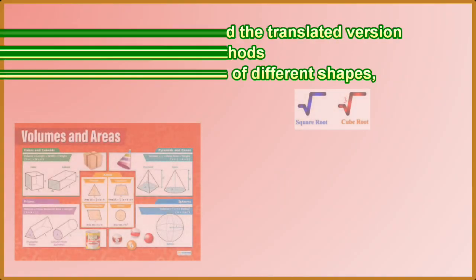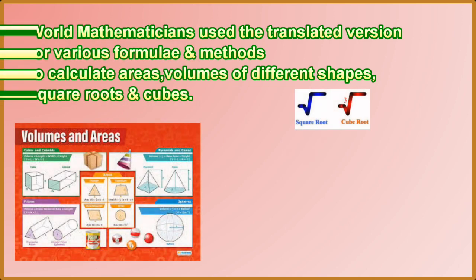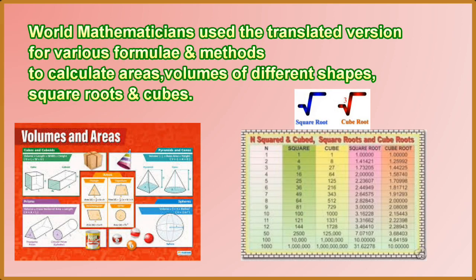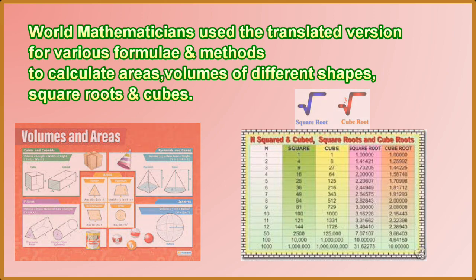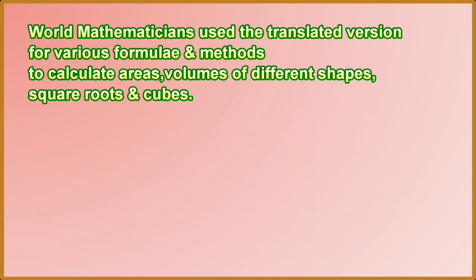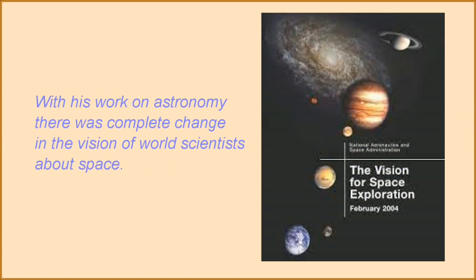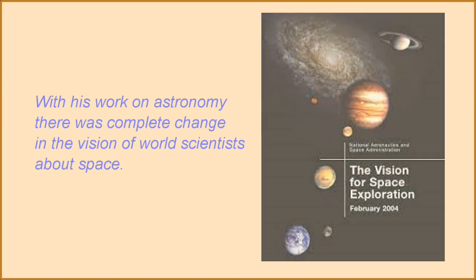This book was translated in Latin language in the 13th century. World Mathematicians used the translated version for various methods to calculate areas, volumes of different shapes, square roots and cubes. With his work on astronomy, there was complete change in the vision of world scientists about space.